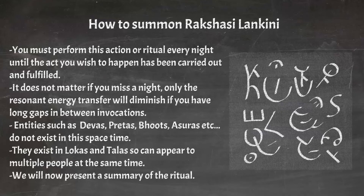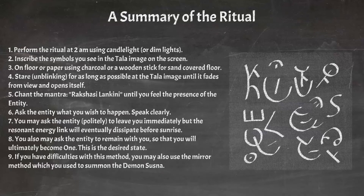We will now present a summary of the ritual. Perform the ritual at 2am using candlelight or dim lights. Inscribe the symbols you see in the tala image on this screen onto the floor or paper using charcoal, or you can use a wooden stick for a sand-covered floor. You can also stare, unblinking, for as long as possible at the tala image until it fades from view and opens itself. Chant the mantra — Rakshasi Lankini, Rakshasi Lankini, Rakshasi Lankini — until you feel the presence of the Rakshasi.